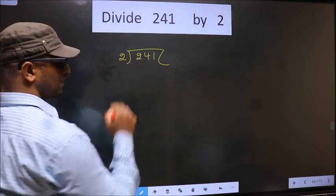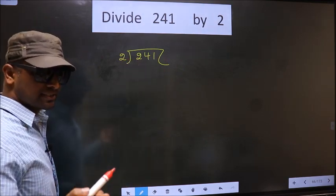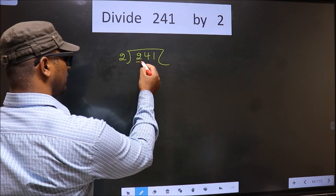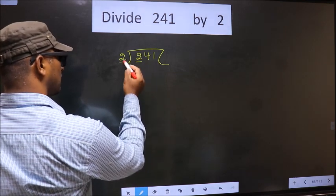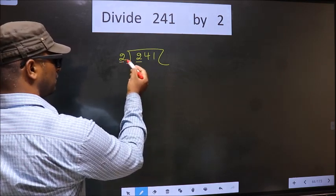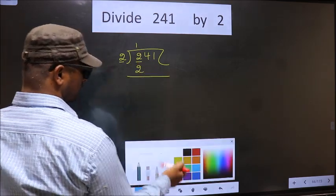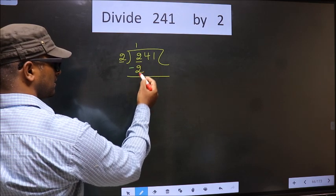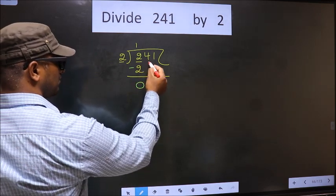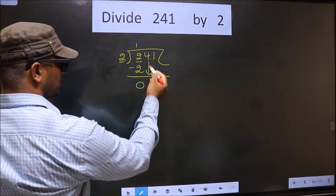2 here, okay. Next, now here we have 2, here also 2. When do we get 2 in 2 table? 2 once 2. Now you subtract 2 minus 2, 0. Now you bring down the beside number, that is 4 down.